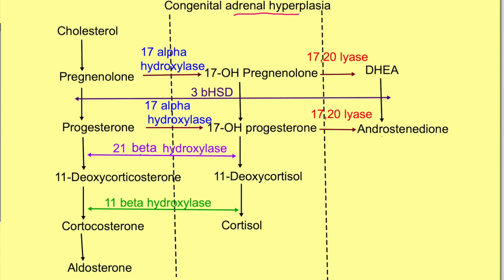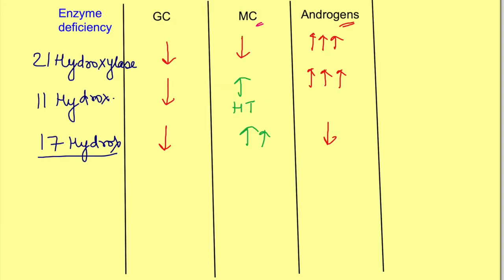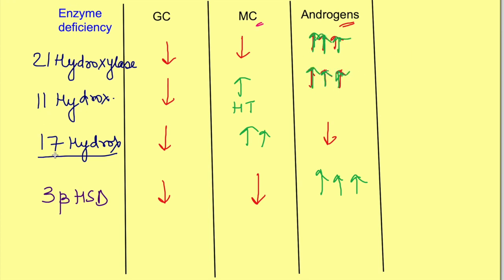The final enzyme deficiency is 3-beta hydroxysteroid dehydrogenase. This enzyme is required across all three pathways. So glucocorticoids and mineralocorticoids will be deficient. However, the first pathway can proceed uncontrolled and there will be synthesis of excess dehydroepiandrosterone. So with deficiency of 3-beta hydroxysteroid dehydrogenase: deficiency of glucocorticoids, deficiency of mineralocorticoids, and increased androgens.